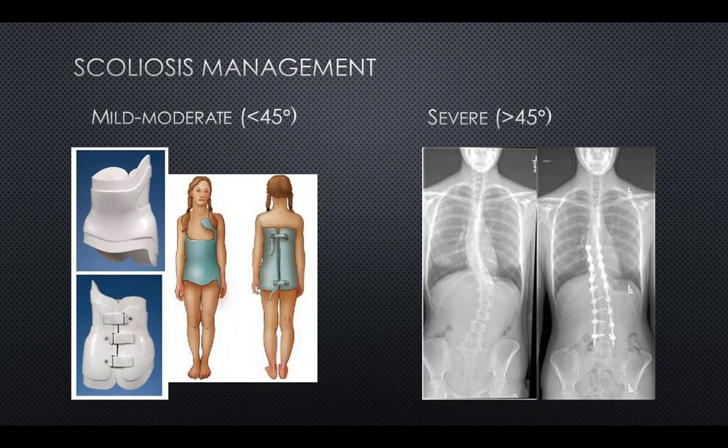Especially with scoliosis, the first treatment is usually bracing. The core is braced with hard plastic in attempts to realign the spine and provide structural support. Unfortunately, if the amount of curvature is greater than 45 degrees, often the only option is surgical intervention. It is common to fuse the spine to maintain structural support; however, in fusing the spine, patients often lose mobility.